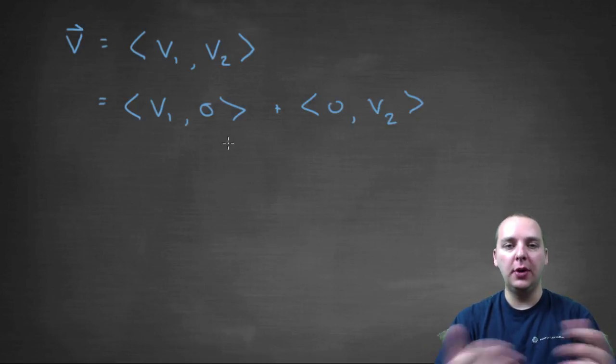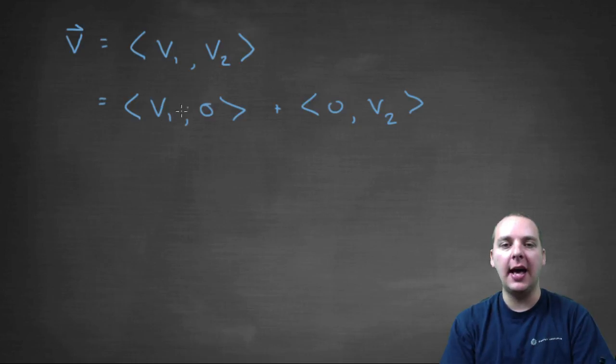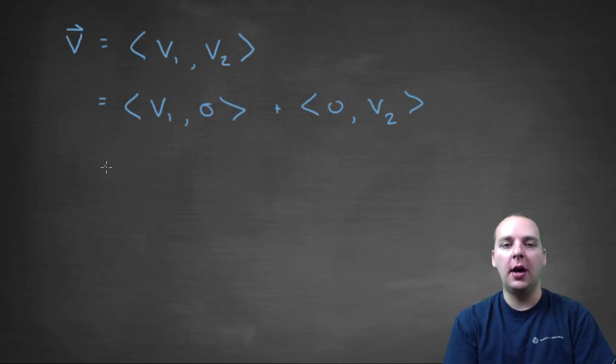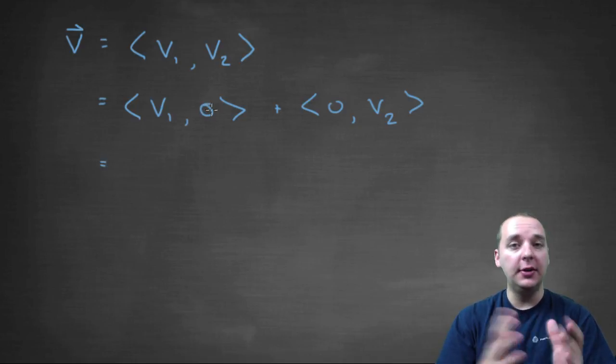That's true, because if you wanted to add these two vectors, you would just add the first components and add the second components, and you'd get <v1, v2>. And then, don't worry about why, but just agree or disagree if you can do this as well.